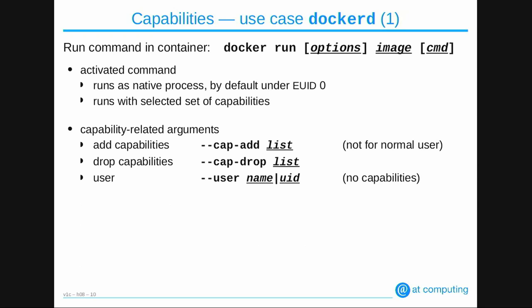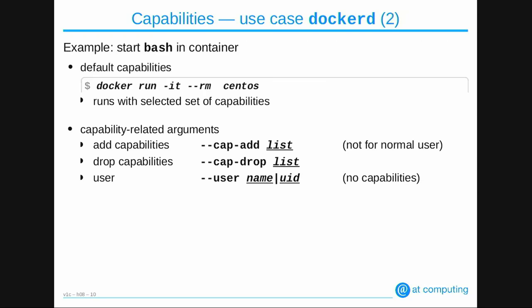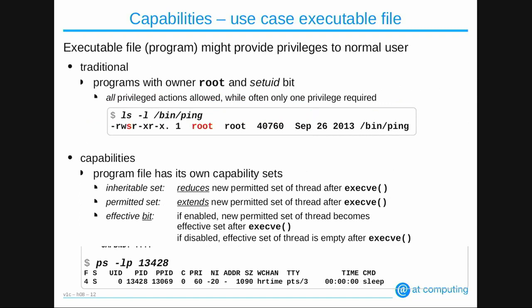Another thing that influences capabilities for Docker is the --user option. You can run your process inside the Docker container with another username or user ID instead of root. At that point it drops all capabilities, so the process in the container has no capabilities. And you cannot use --cap-add to give it capabilities — if started as a normal user, it has no capabilities at all.